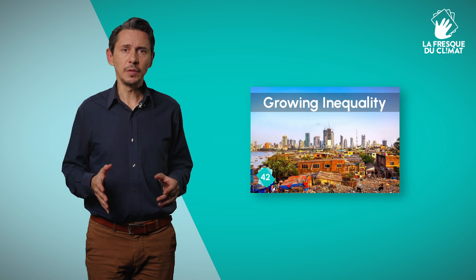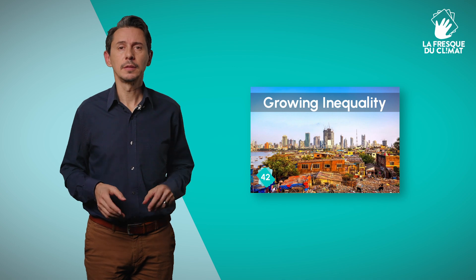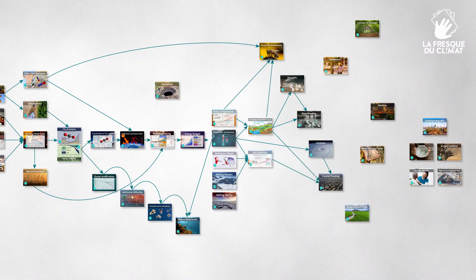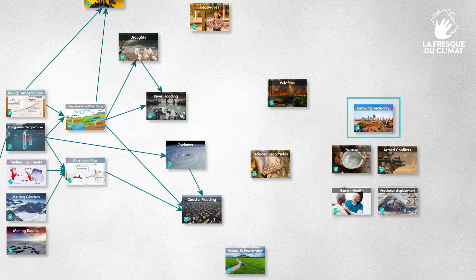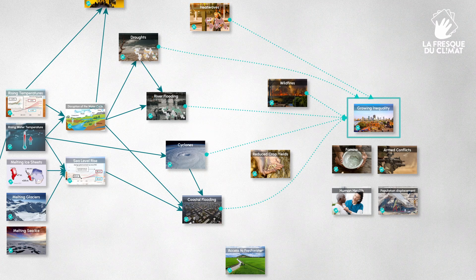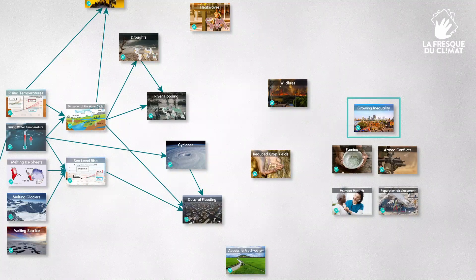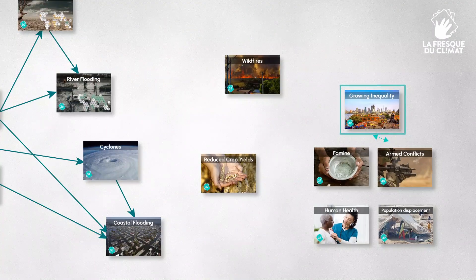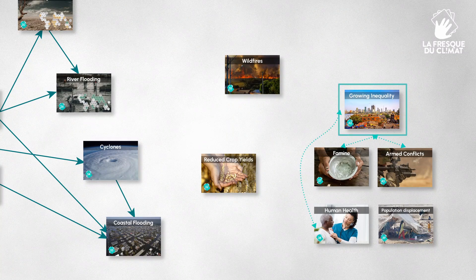There are many links between this card and the other cards. The increase in inequality can be linked to all extreme climate phenomena because, as we have already seen, these events hit the most vulnerable countries and populations the hardest, and that accentuates inequality. It also amplifies the risk of armed conflicts, famines, impacts on human health, and the risks of population displacement.